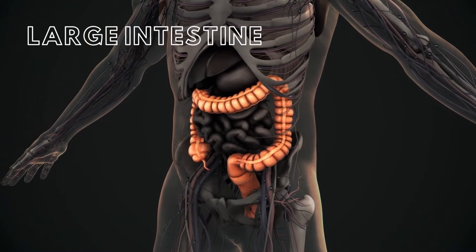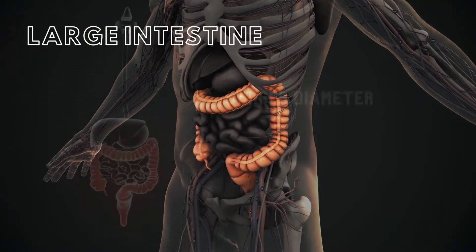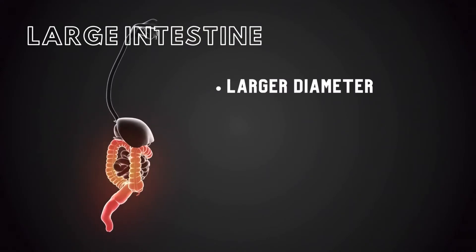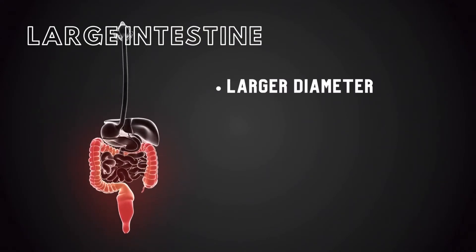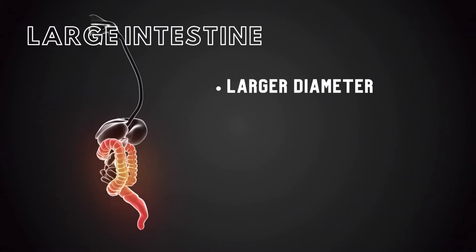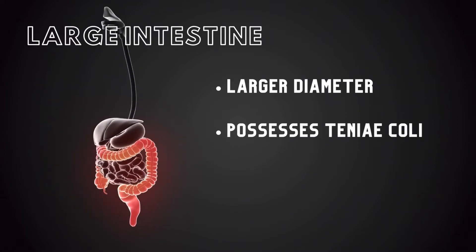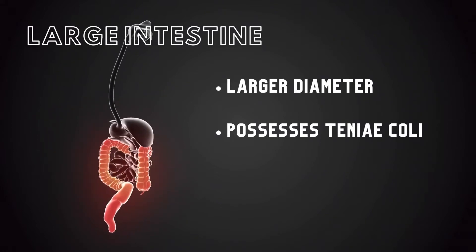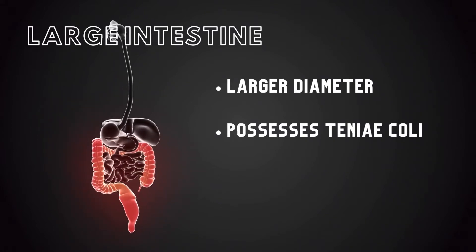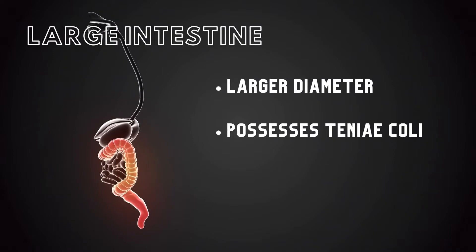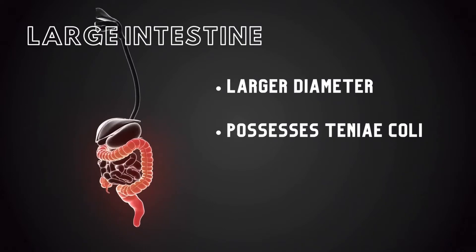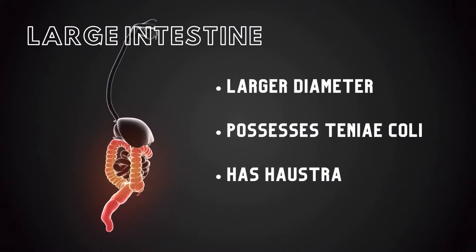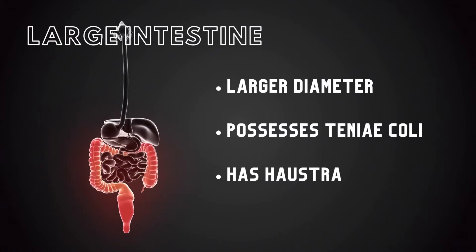The large intestine possesses three gross anatomical characteristics: one, it has a significantly larger diameter than the small intestine; two, it possesses teniae coli, which are three distinct visible bands of smooth muscle located within the muscularis externa of the intestinal wall; three, it has haustra, which are sacculations of the intestinal wall located between the teniae coli.